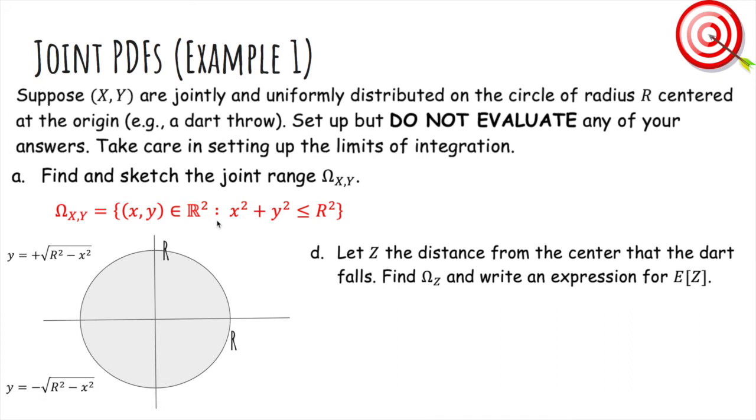Now let z be the distance from the center that the dart falls. Let's find the range of z and find an expression for E[z]. The possible values of the distance from the center is anywhere from zero if you're perfectly at the middle, or R if you're on the edge. z is actually √(x² + y²), that's just the definition of distance, Euclidean distance.